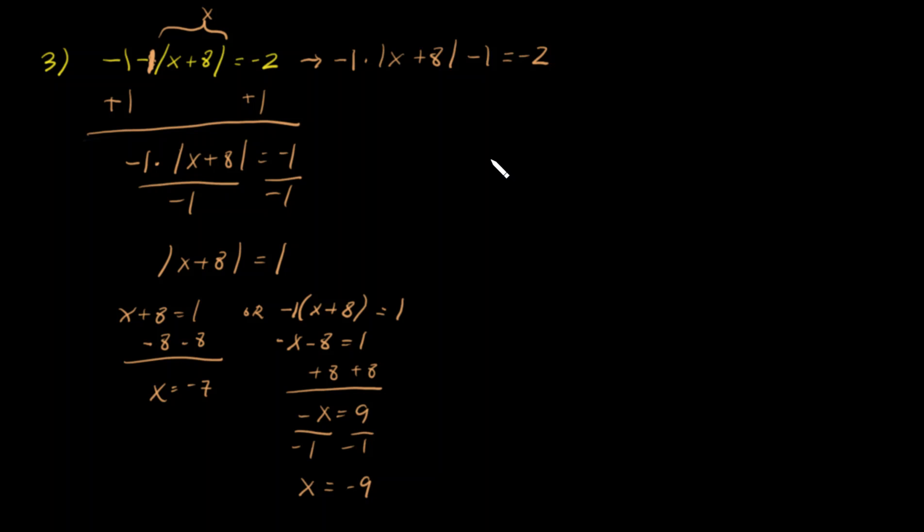So my two answers are x equals negative 7 or x equals negative 9. And I can actually check that by putting it back into the equation. Negative 7 plus 8 is positive 1. The absolute value of positive 1 is 1. After it comes out of the absolute value, it's 1. 1 times negative 1 is negative 1. You add that to negative 1, you get negative 2.